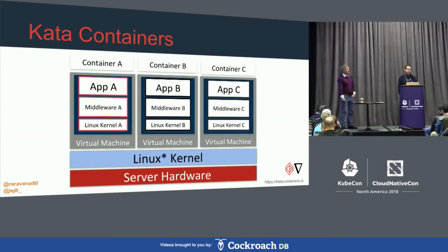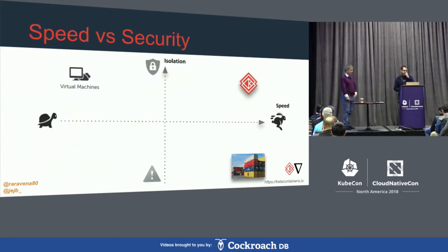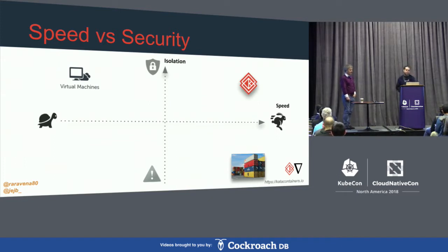Kata containers: the difference here is that you have a Linux kernel with a virtual machine, and inside that VM you run a container. The VM has its own unique kernel — Kata containers uses a lightweight kernel. If something goes wrong with that kernel, the host Linux kernel doesn't get compromised, and other containers' kernels don't either. Kata has a tradeoff between speed and isolation — it's not quite as fast as a regular container, but faster than a regular virtual machine because it's lightweight.